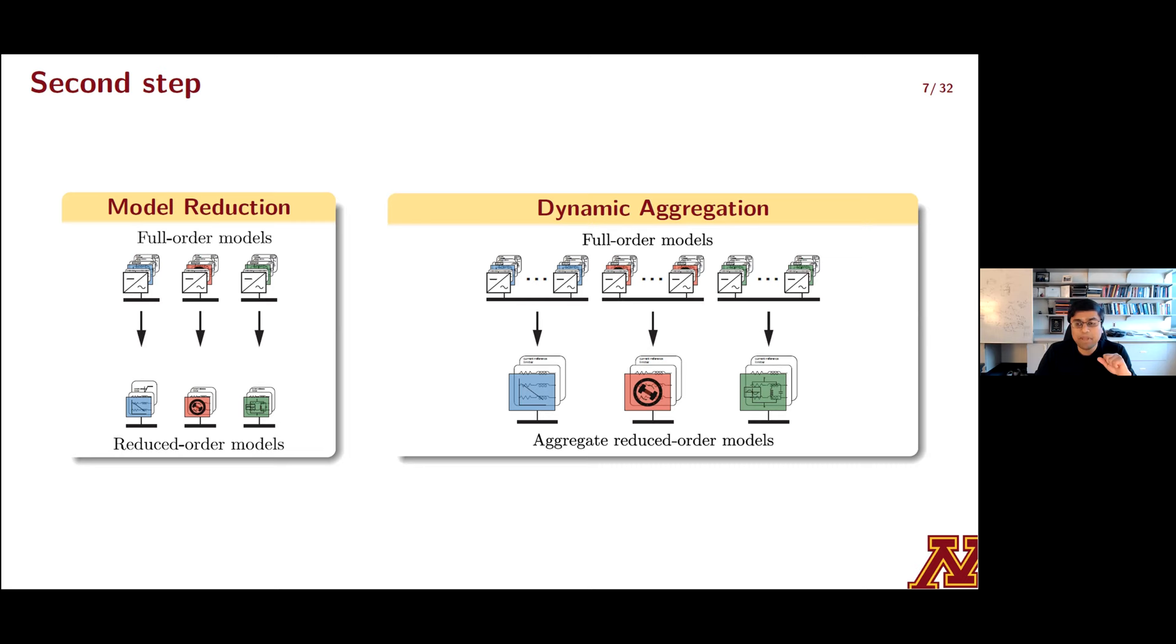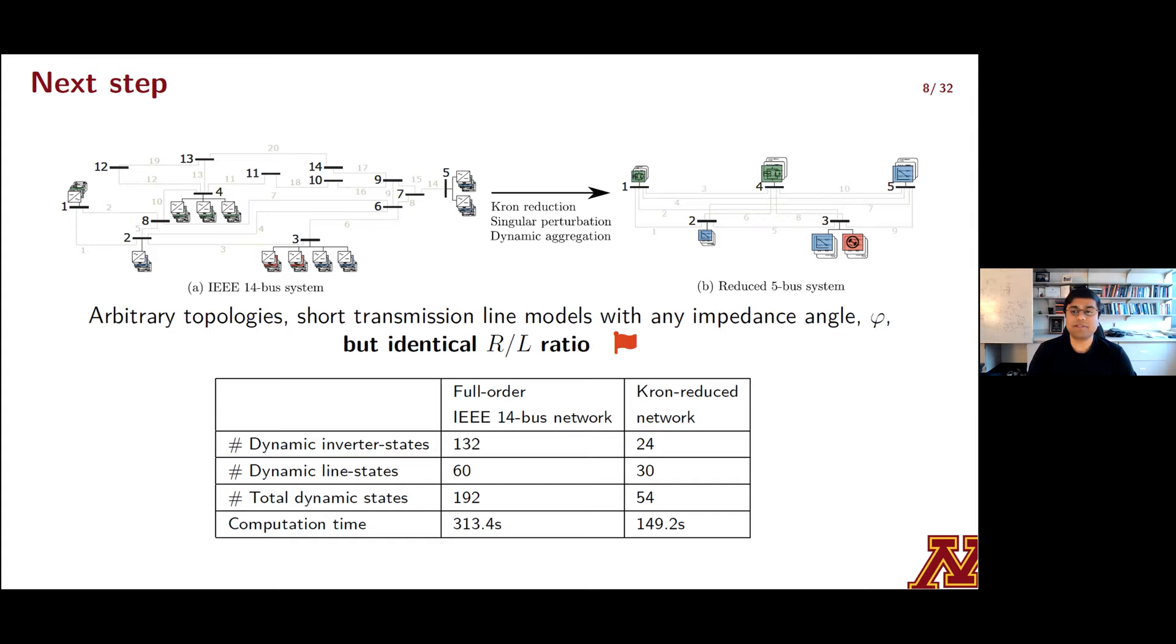So having outlined how to obtain reduced order models at the inverter and the bus levels, we'll now move on to the next obvious step. We'll put it all together. We considered an EMT model for networks of grid forming inverters and the transmission lines are modeled as RL circuits. And here's where things start to get interesting from the network point of view.